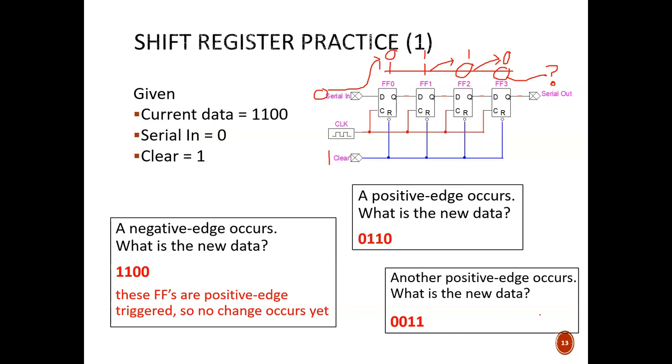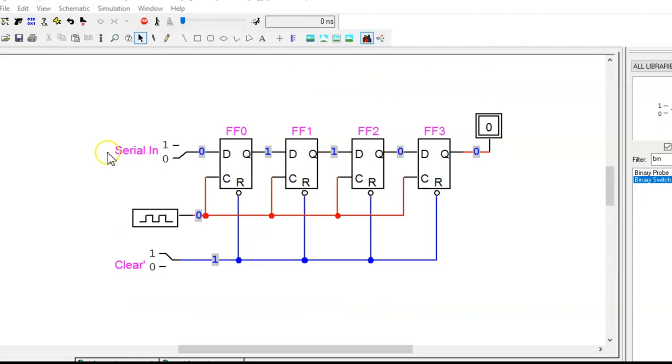Here, we see the shift register with the same starting values of 1100. I'll leave the clear switch inactive, and hold the serial in at 0. Now, I'll start the clock at a slow pace. We can watch as the bits move along the register. Now, I'll flip serial in to 1, and we can see that 1s are now shifted into the leading flip-flop, and then on down the line. If, at any point, I want all 0s in the register, I can simply activate the clear signal.